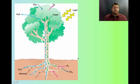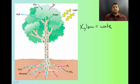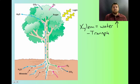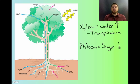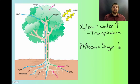To review: xylem transports water generally up from the roots to the leaves where it's needed for photosynthesis. It's powered by transpiration — water leaving the leaves through the stomates creates a suction that draws water up. Phloem carries sugars or food generally in the downward direction, from the leaves where it's made to the stems and roots where it'll be stored for later use. There are two types of xylem cells — vessel elements and tracheids — and two types of phloem cells — sieve tube cells and companion cells.